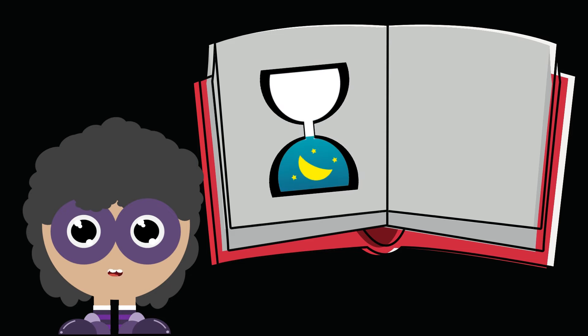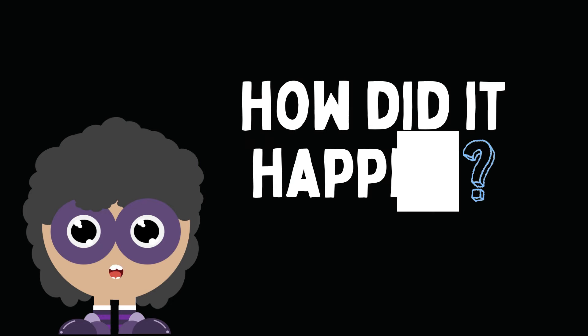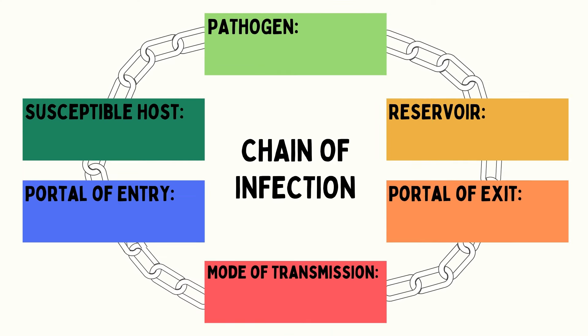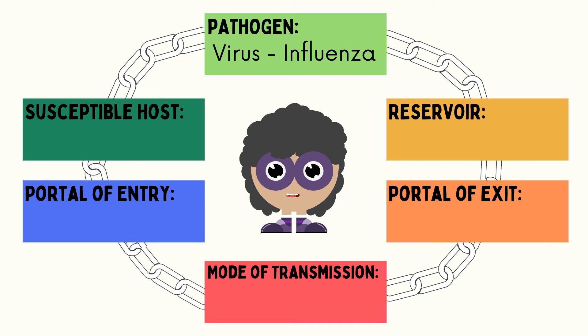The next day, Vince had been sneezing and coughing — he didn't feel well too. How did it happen? Let's find out. Let's use the story of Francis and Vince to understand the flow of the chain of infection. I want you to try it first — I'll give you 5 seconds to answer. Let's check your answers.